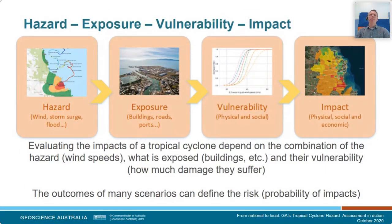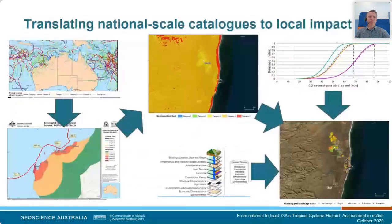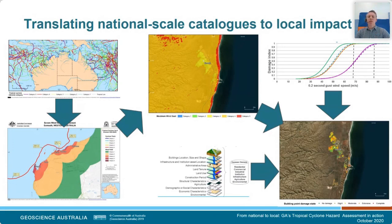Blending these components together is actually the really easy part once all the components are ready. I've given you an insight into what's gone into the hazard. Similar effort has gone into the exposure, the vulnerability — and I'm very indebted to the vulnerability resilience mitigation section and the landscape information section at GA for their contributions. Building exposure information is at its most fundamental level unit-level data. Each individual building has attributes that govern how it will respond to the loads imposed by extreme winds, which increase exponentially as wind speeds increase.